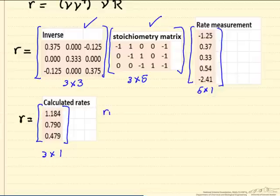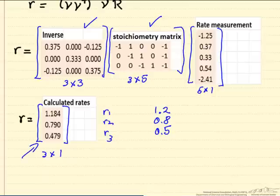So this is the calculated rate for r1, r2, and r3 from our measurements, which had some errors. And originally to generate the measurements that we then added errors to, we start with rates of 1.2, 0.8, and 0.5. So you can see the errors in those measurements introduce some errors into our calculated rates. But this is the best fit of the data using a least squares method.